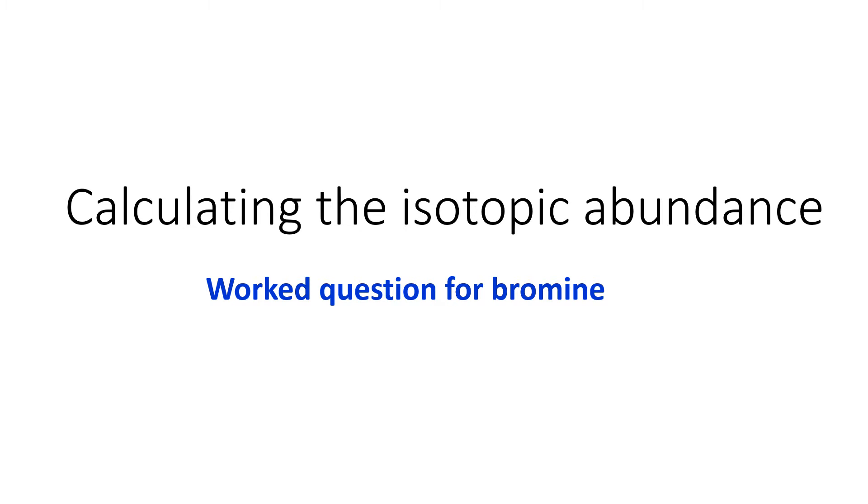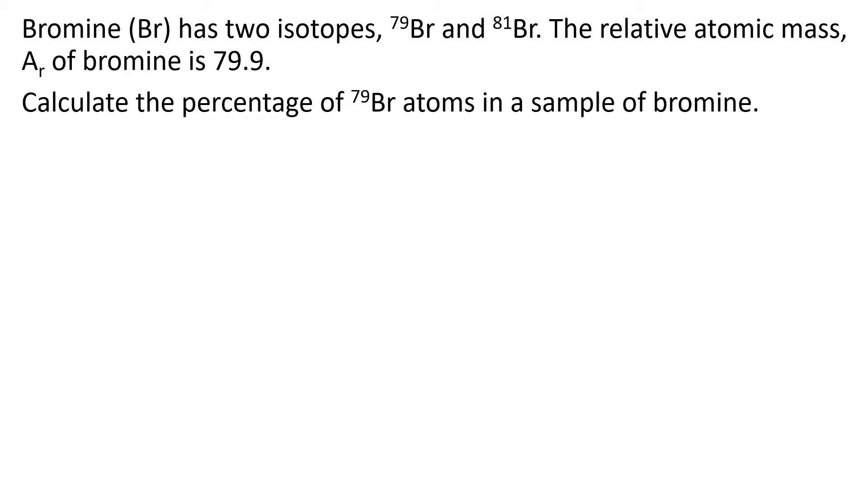Hello and welcome to this clip having a look at how to calculate the isotopic abundance of an element when you're given the relative atomic mass. We're going to use bromine as our example. Bromine has two isotopes, 79 bromine and 81 bromine. The relative atomic mass of bromine is 79.9.